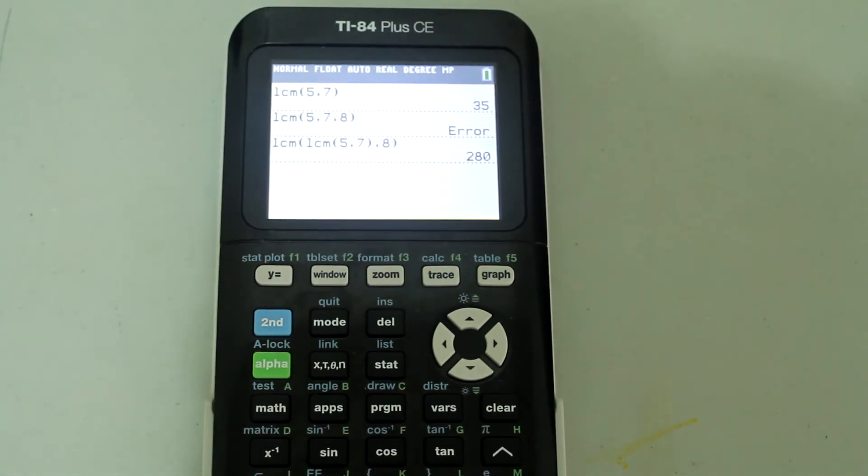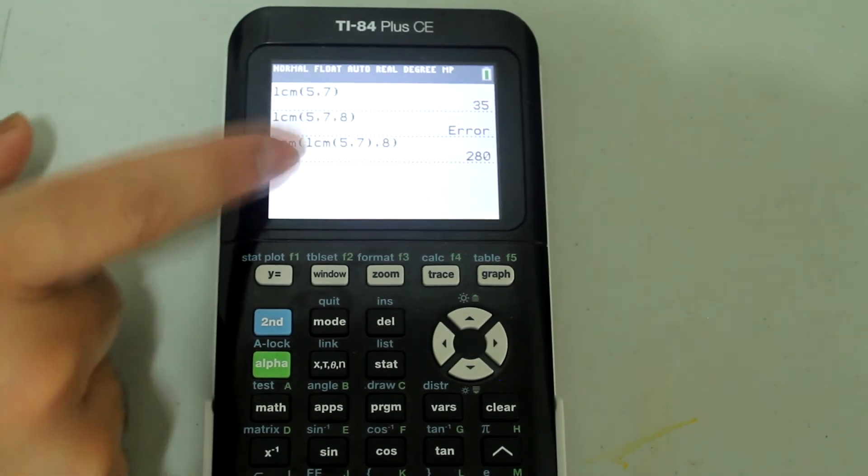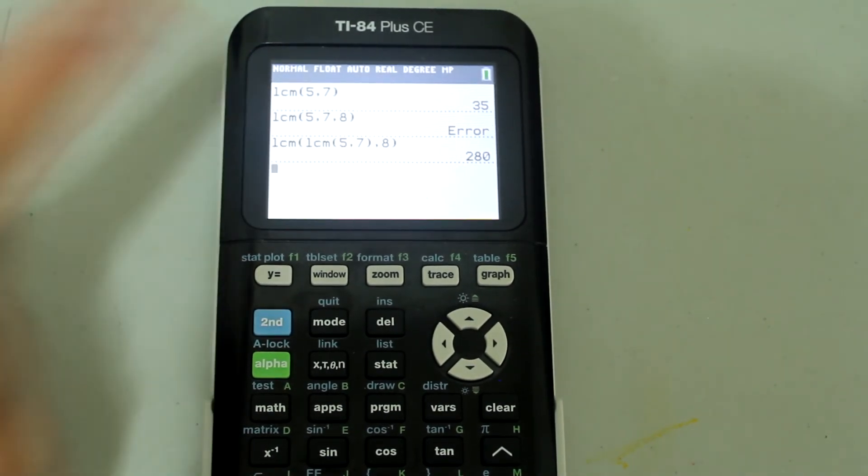So that is the least common multiple for 5, 7 and 8. All you have to do is make sure that the LCM commands don't have more than two entries or just make sure that there is only one comma in there.